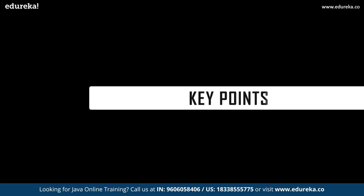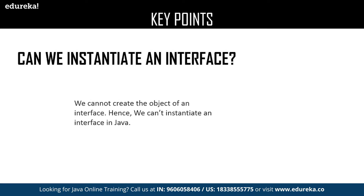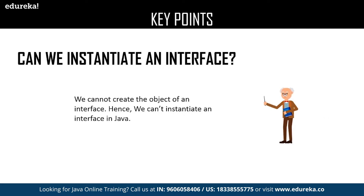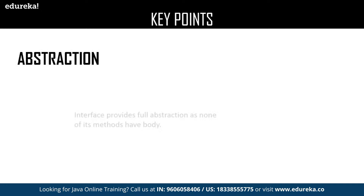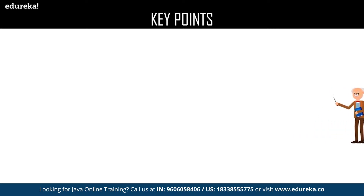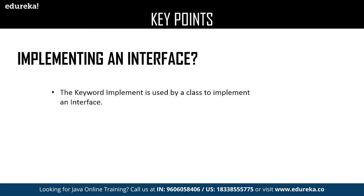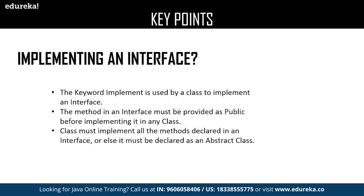Now let us discuss the key points about Java interfaces. First: can we instantiate an interface? We cannot create an object of an interface, hence we cannot provide instances in an interface. The next key point is abstraction — the major advantage of interface is abstraction because none of the methods declared in an interface have a body. The next key point is implementing an interface — the keyword implements is used in a class to implement the methods of an interface. The method in an interface must be provided with public access modifier. Class must implement all methods declared in an interface or else it must be declared as an abstract class.